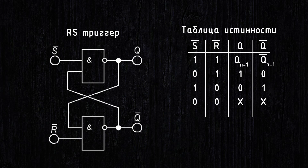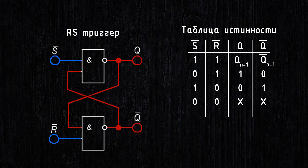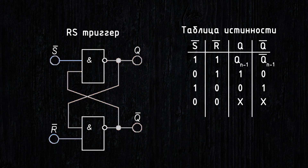The last combination is the forbidden mode, when both inverted inputs R and S are set to 0. During the action of the input signals, the logical levels at the trigger outputs are the same, and after their action ends, the trigger will assume a random state. It has almost no practical use, which is why it's called the forbidden mode.